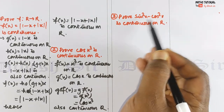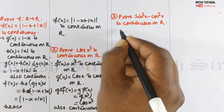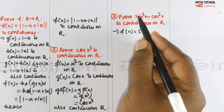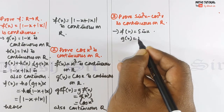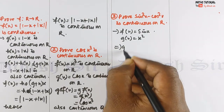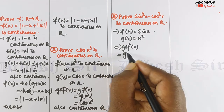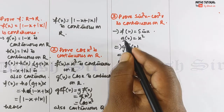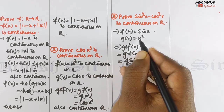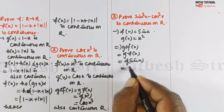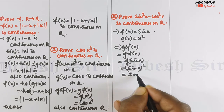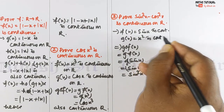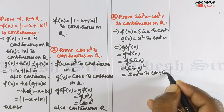Next, we have sin²x and cos²x. We can write these separately. Take f(x) = sin x and g(x) = x². Then g(f(x)) = g(sin x). Since g(x) = x², g(y) = y², g(sin x) = sin²x, which is (sin x)² = sin²x. So sin²x is continuous on R as a composite of two continuous functions.